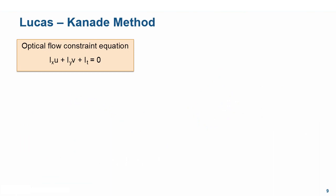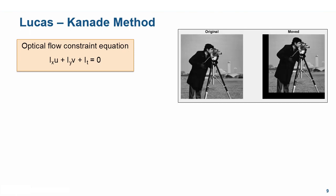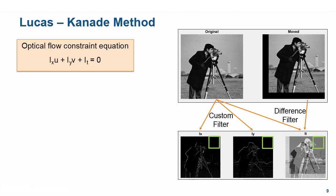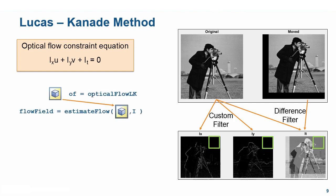The Lucas-Kanade method is a sparse flow method that also solves for the optical flow constraint equation. Given two image frames, it uses a custom filter to calculate the spatial gradients and a difference filter to compute the temporal gradient. After this, the method divides the results into smaller sections to obtain the optical flow vectors. Since it operates only on sections of images, this results in faster computations, although sometimes this could lead to less accurate results. We can implement this using the opticalFlowLK object.